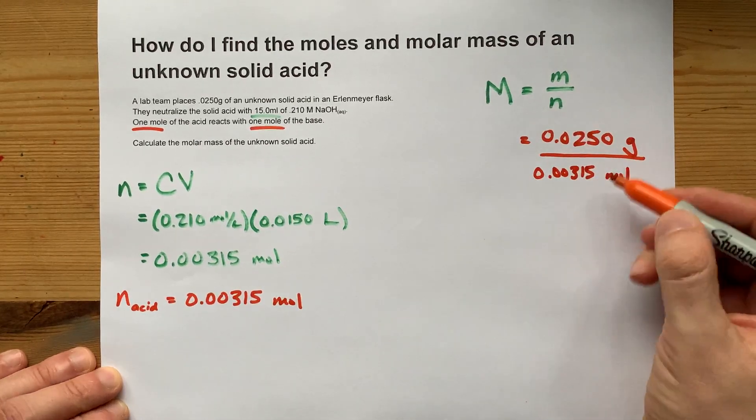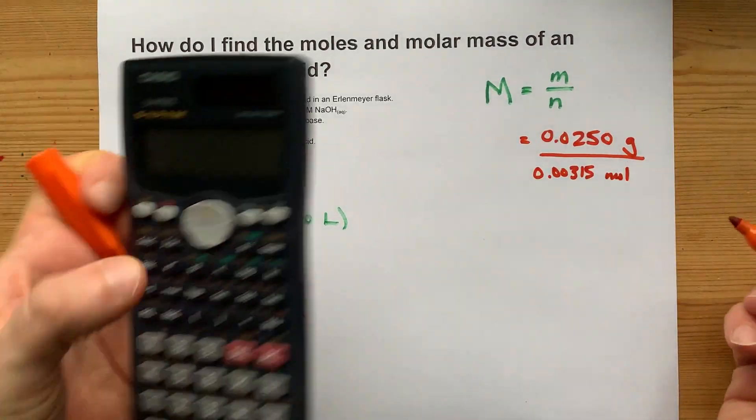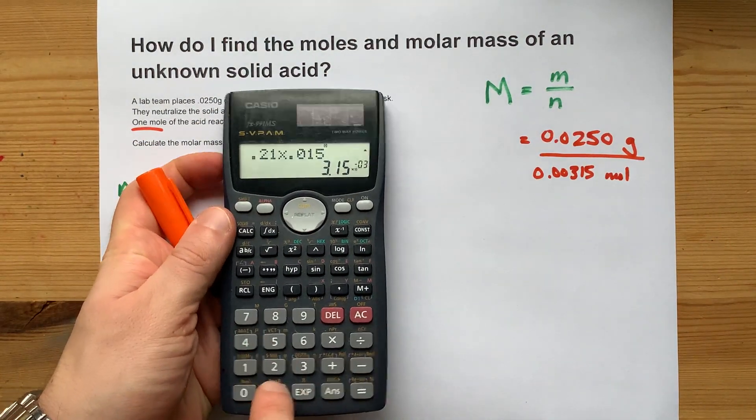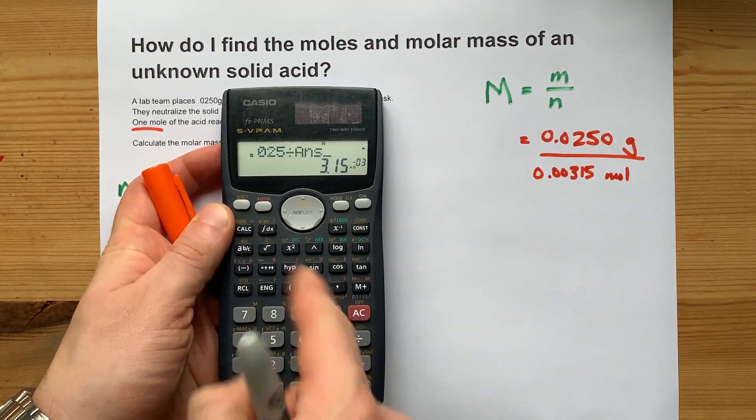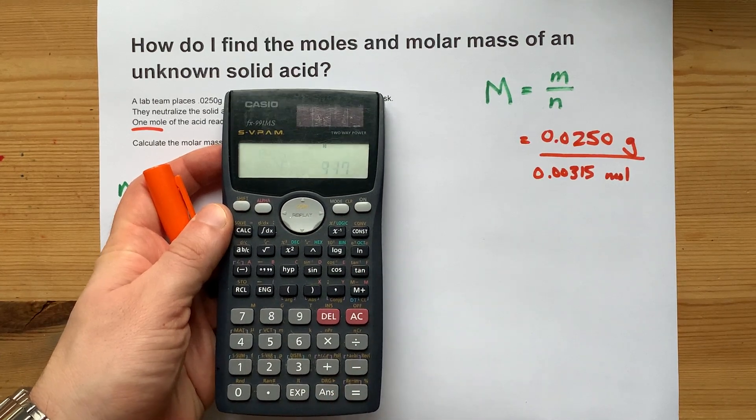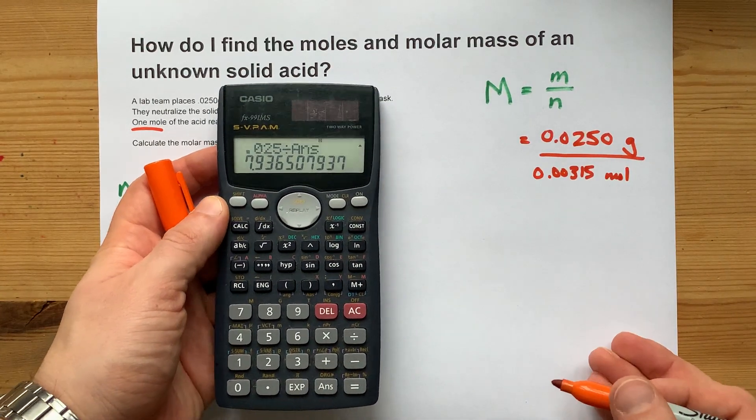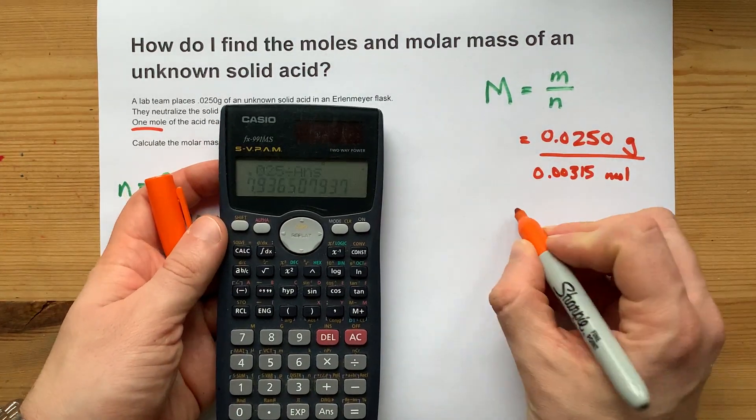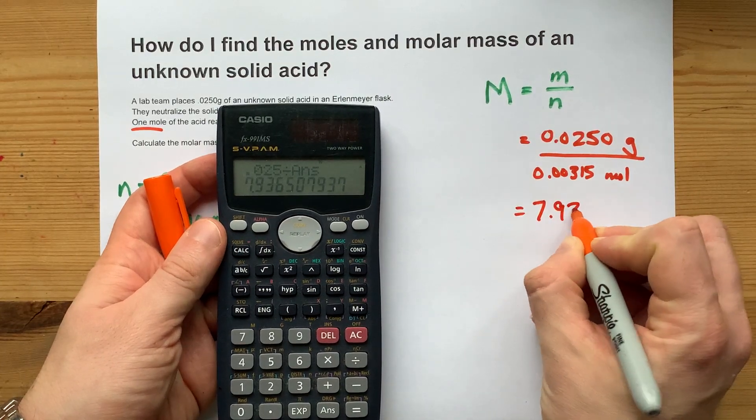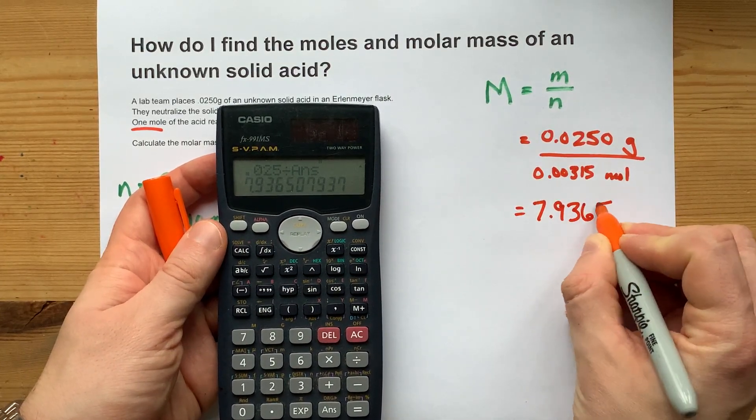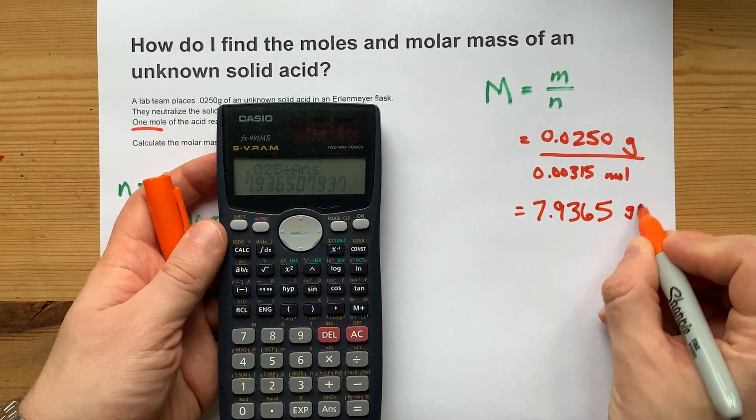You'll see once we do this division, we'll get an answer in grams per mole. 0.025 divided by the answer I got previously gives me 7.9365 grams per mole.